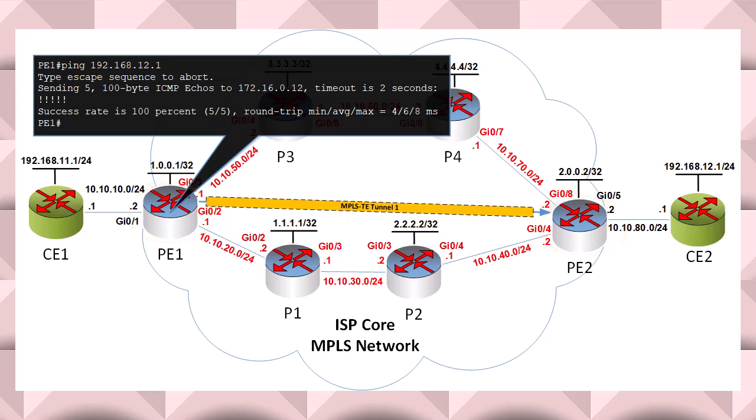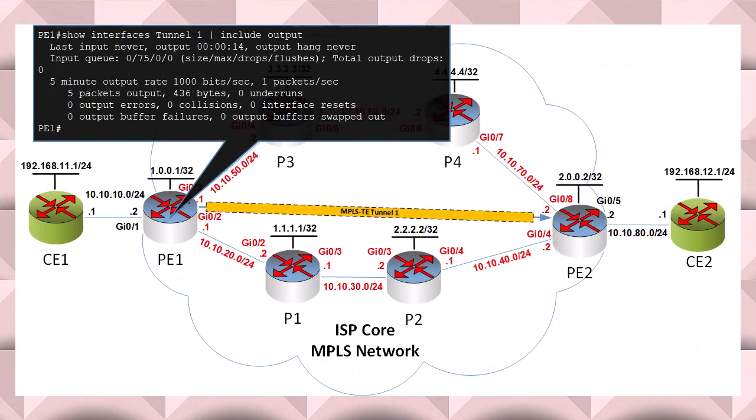Let's now take a look at the result of this ping that we routed down our tunnel. First, let's examine the tunnel interface to confirm that we did indeed route traffic via our LSP tunnel. Here we can see that the tunnel has sent five packets, which are our five pings that we sent out. So the tunnel was indeed used.